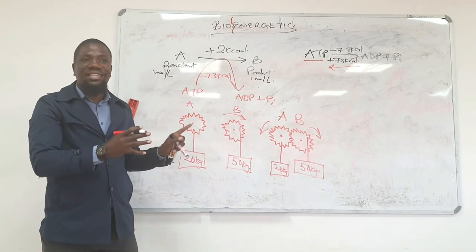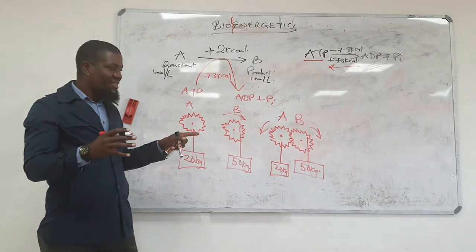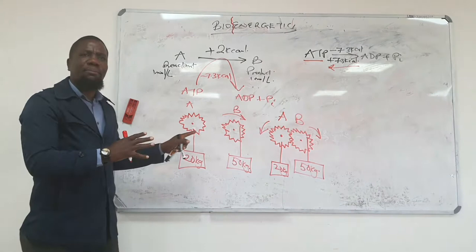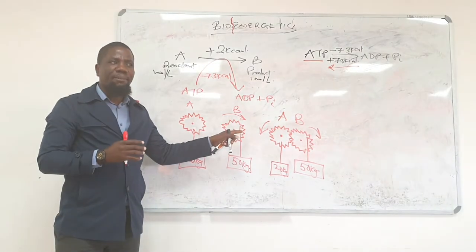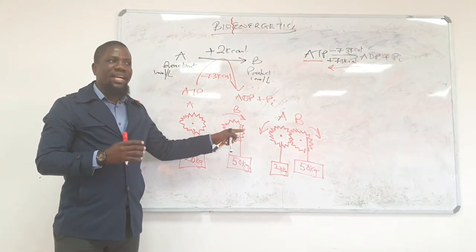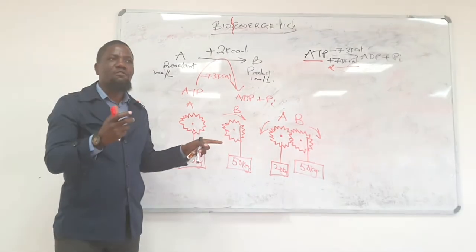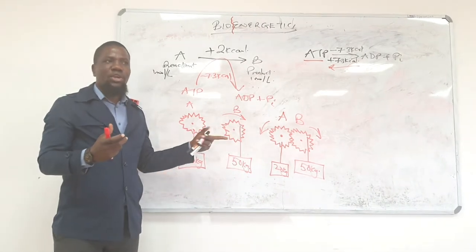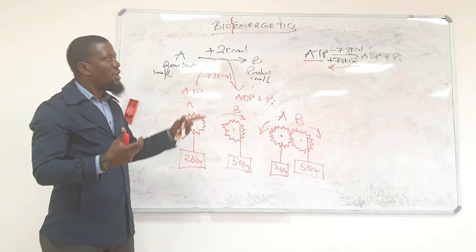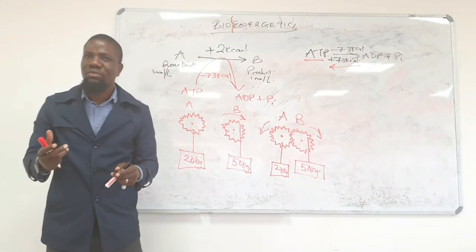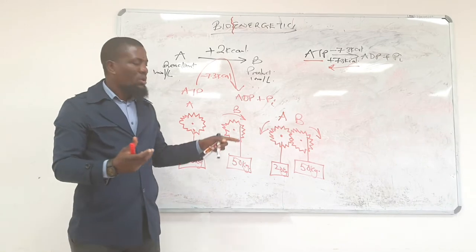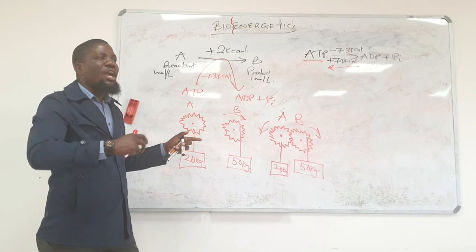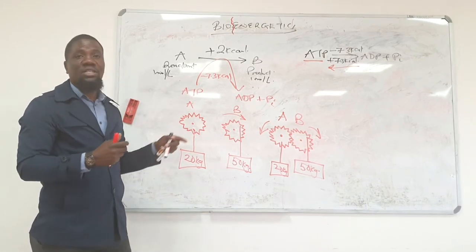If it doesn't make sense at this point, go and make peace with it in the library. This is the principle of reaction coupling. Basically, reaction coupling would involve the transfer of energy from one reaction which is freely proceeding, mainly from a substance which has high energy into a substance which would actually have low energy and forcing that reaction to proceed.